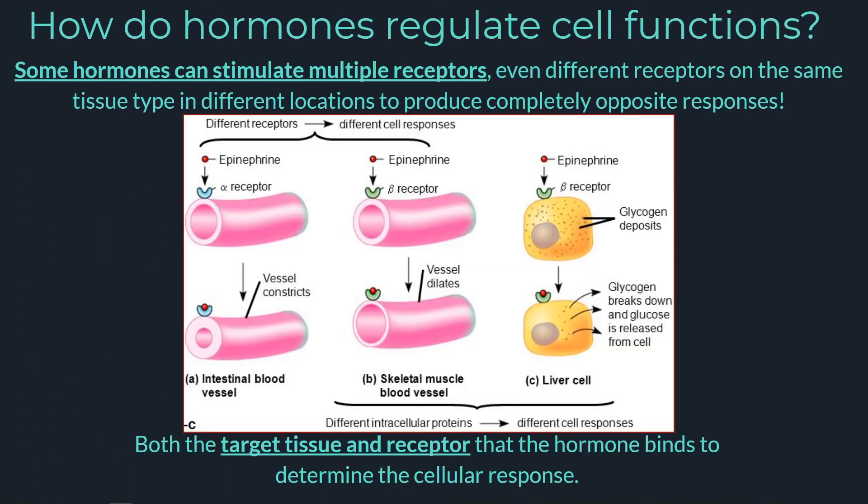The target cell must have a receptor that matches the hormone to trigger a response. Keep in mind that some hormones can actually bind to more than one receptor type, and many hormones bind to the same receptor found on multiple cells through diverse tissue types. They can even bind to different receptors on the same tissue types.